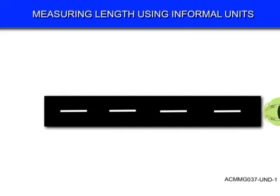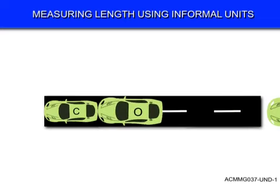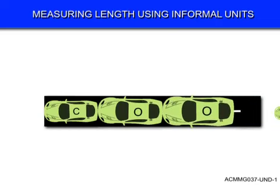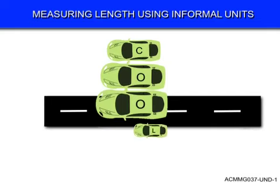Let's see what happens when I don't follow that rule using the cars. Here's my first car. Here's my second car — you can see it's a lot longer. Here's my third car, it's longer again. And here's my teeny tiny last car. Remember in the last example the road was a little bit more than four car lengths. In this one you can see it's less than four car lengths. Well, the road hasn't changed, so something else must have changed — and that was the way that I measured. I'm using different size and different length cars, which is not the way to use informal units. They all must be the same.